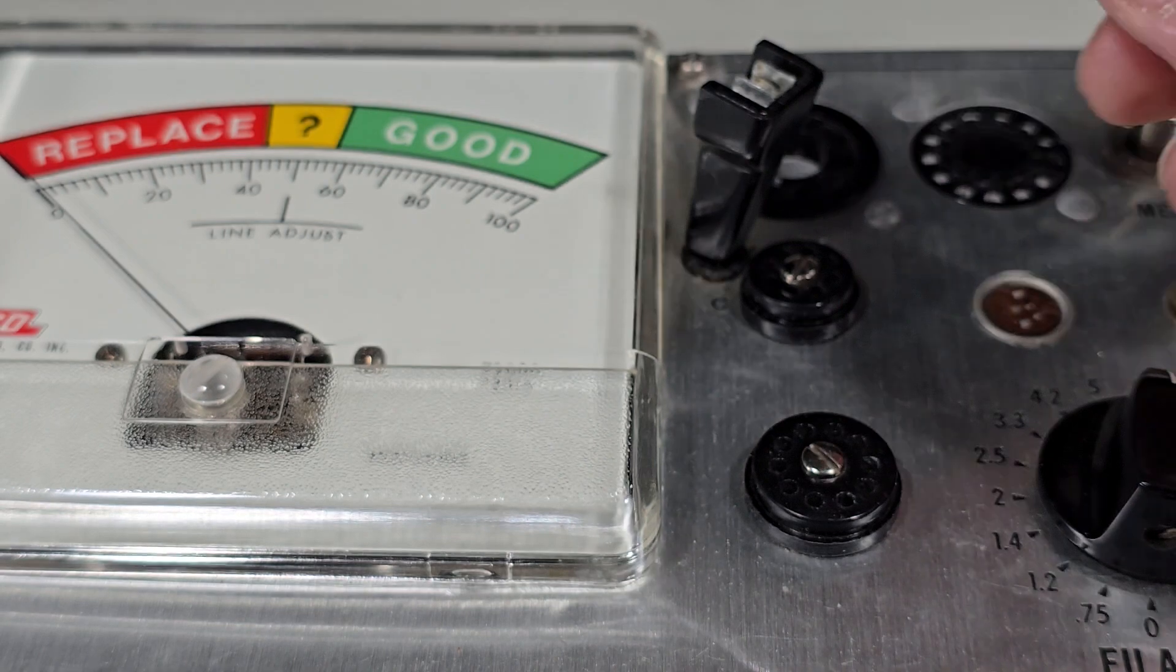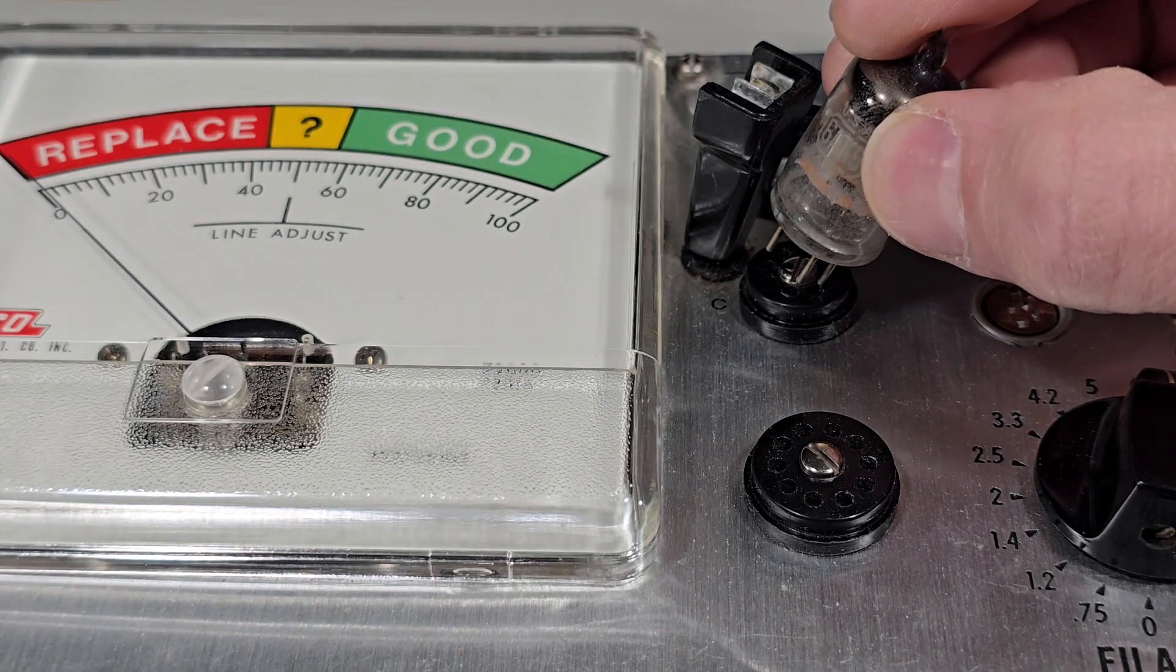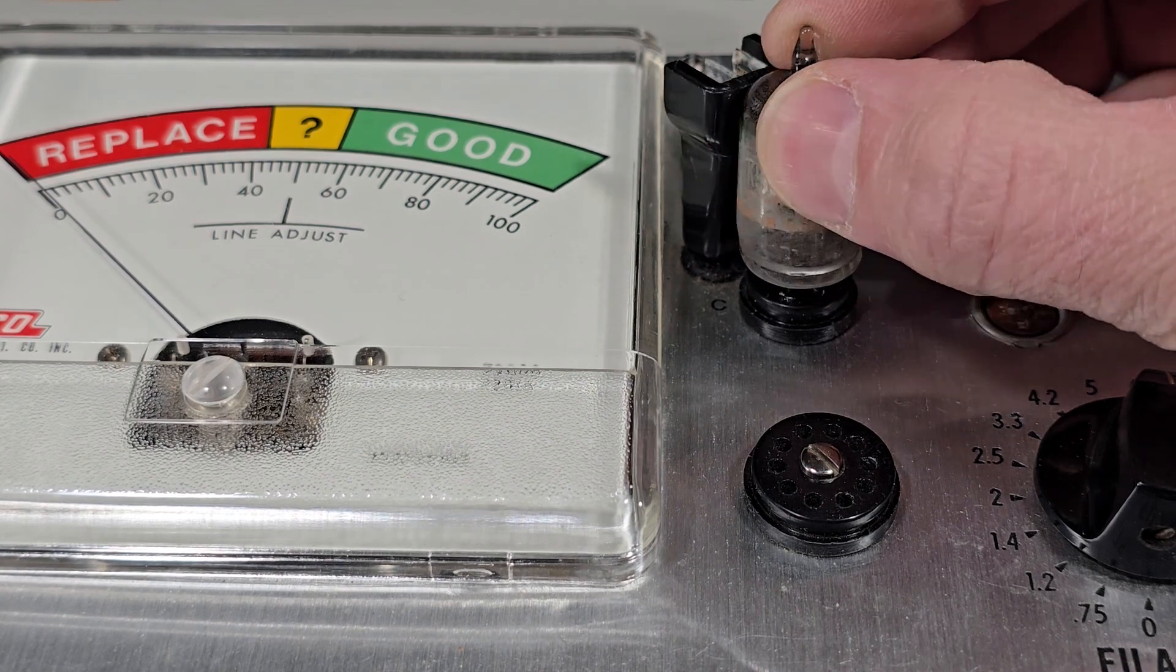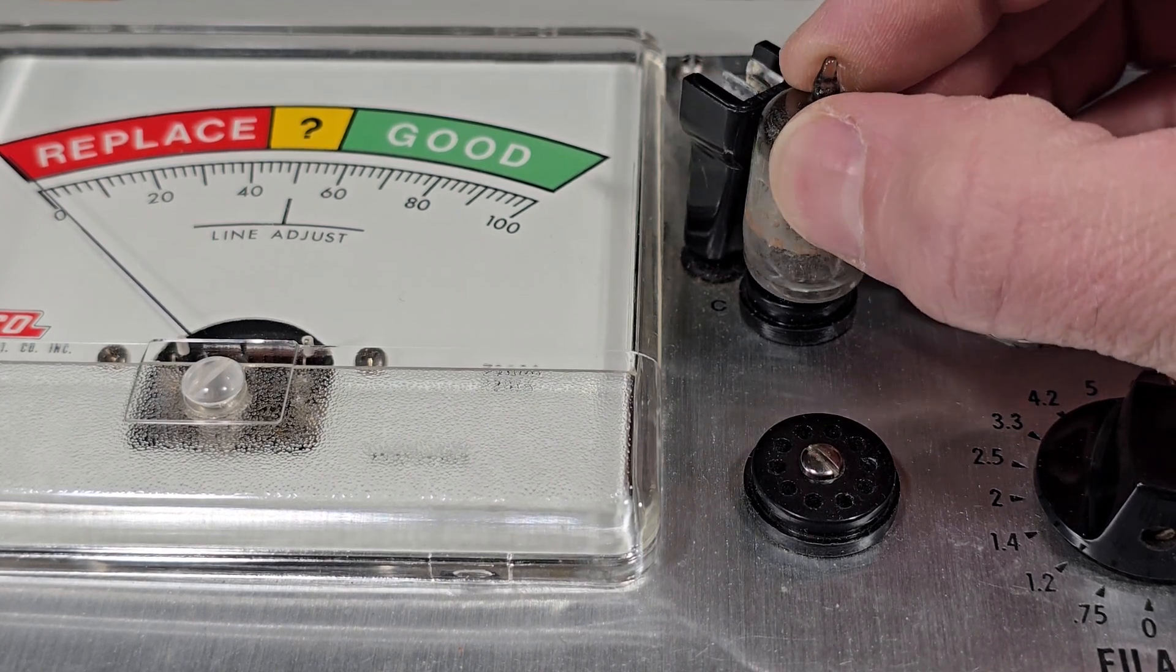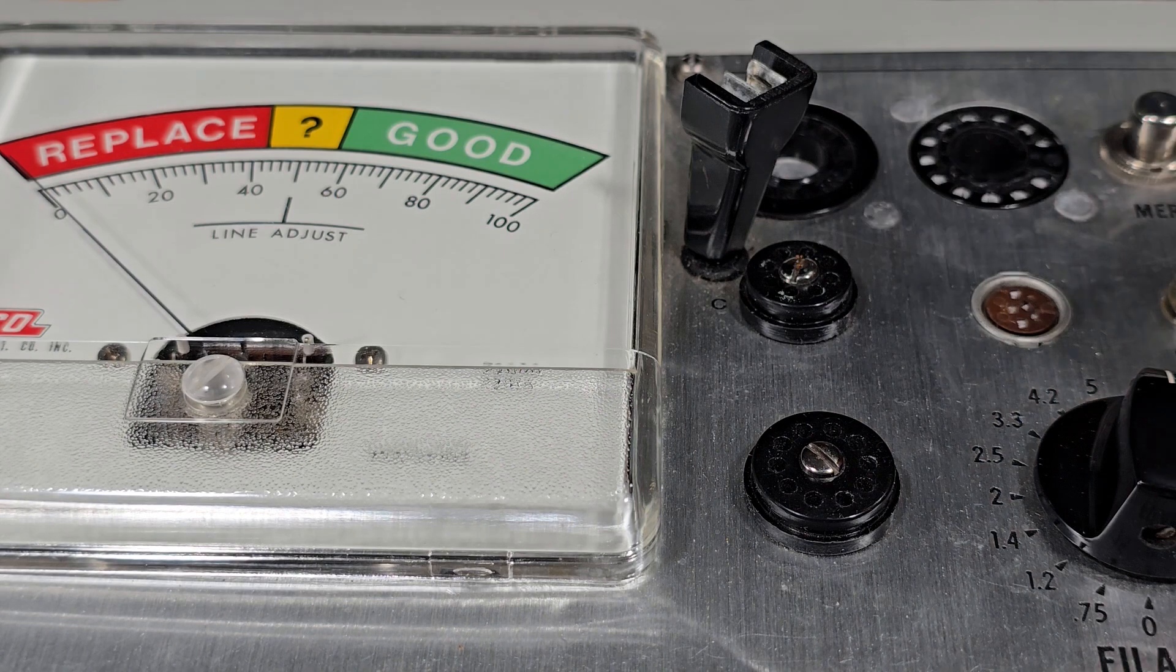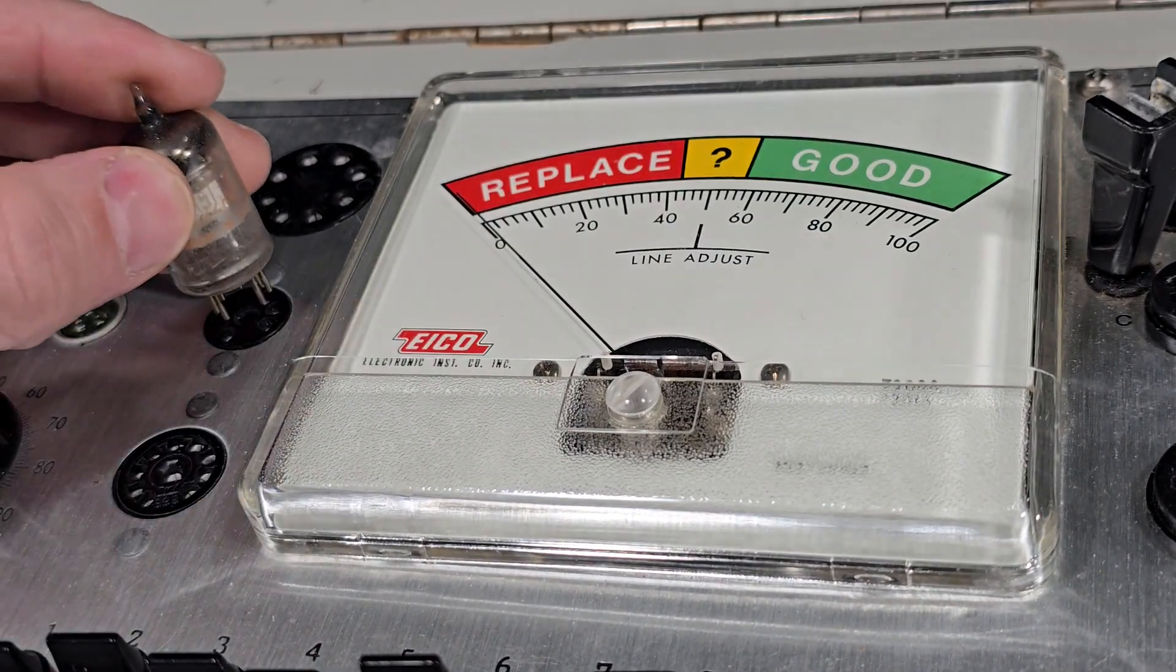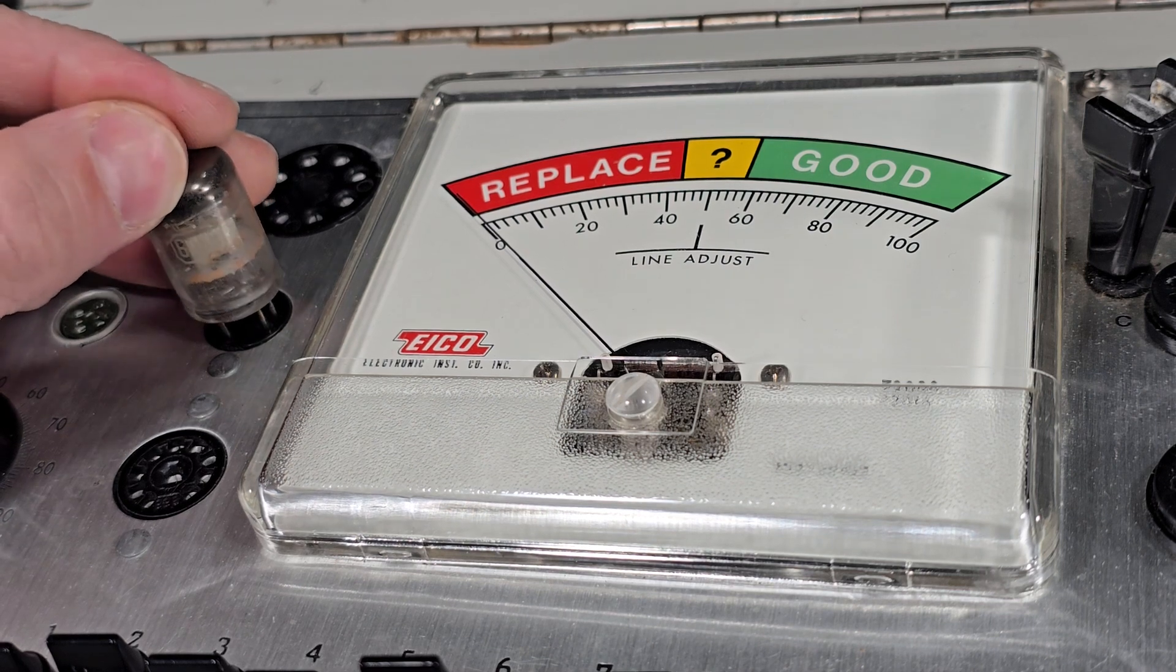The process is the same. We gently insert the tube and rotate like so as we're pushing down. Then we can easily insert the tube into the seven pin socket.